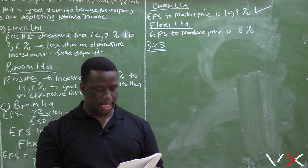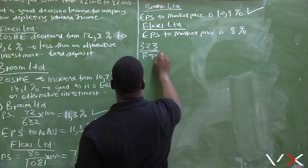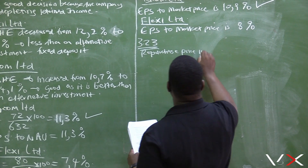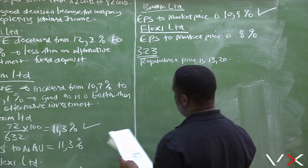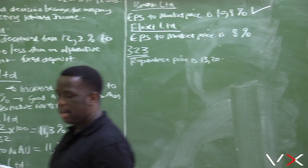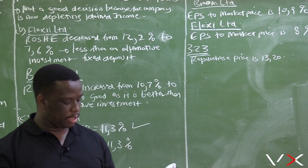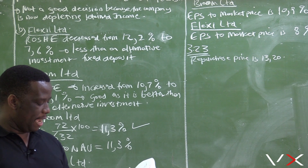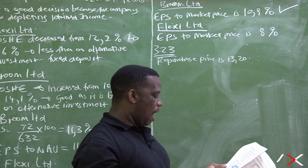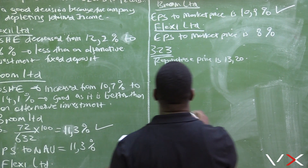For Flexi Ltd, the repurchased price is R20. We want to comment on this price. We can comment on it by looking at the NAV — how much is the value of our shares and how much are they sold for in the market. The repurchased price is R20.